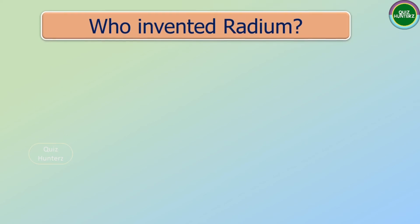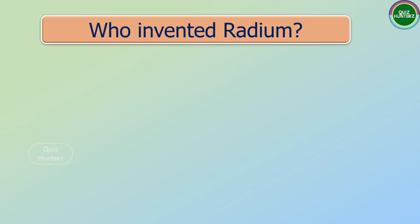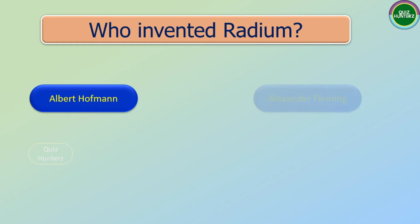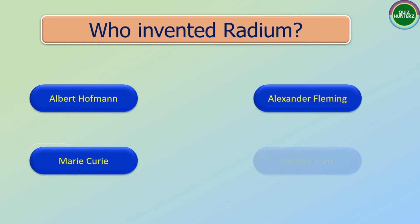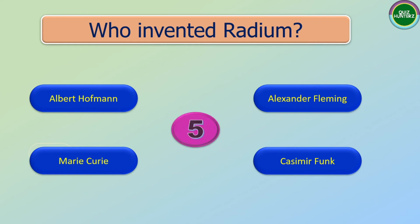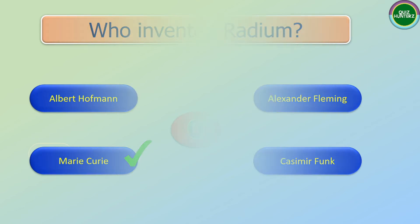Next question: Who invented radium? The options are: Albert Hoffman, Alexander Fleming, Marie Curie, and Casimir Funk. And the correct answer is Marie Curie.